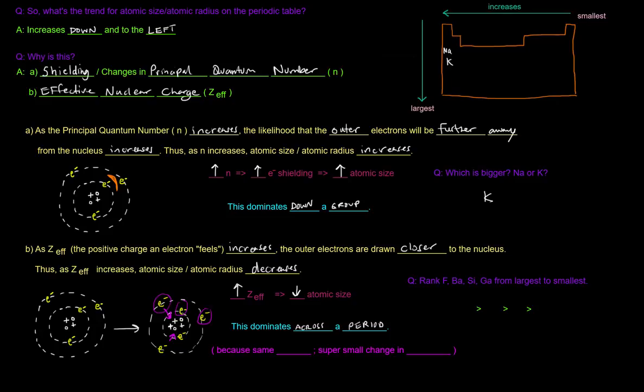If you notice, as you go across a period, the atomic number increases, you have more protons, and so more protons, higher effective nuclear charge.